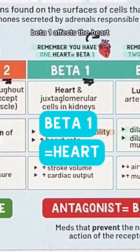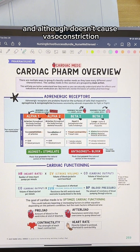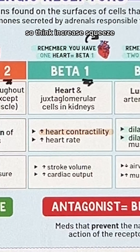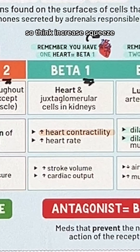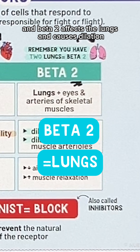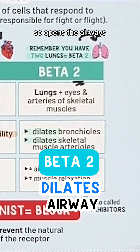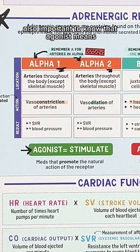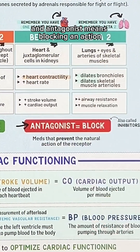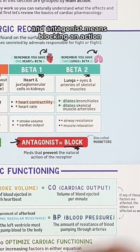Beta 1 affects the heart, and although it doesn't cause vasoconstriction, it does cause an increase in contractility, so think increased squeeze. Beta 2 affects the lungs and causes dilation, so it opens the airways. Also important to know that agonist means stimulating an action, and antagonist means blocking an action.